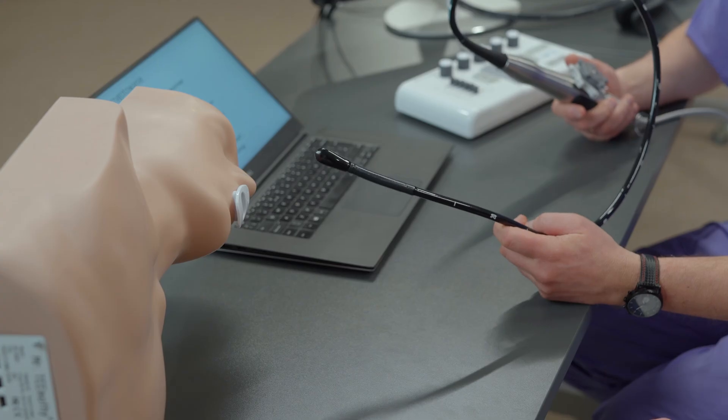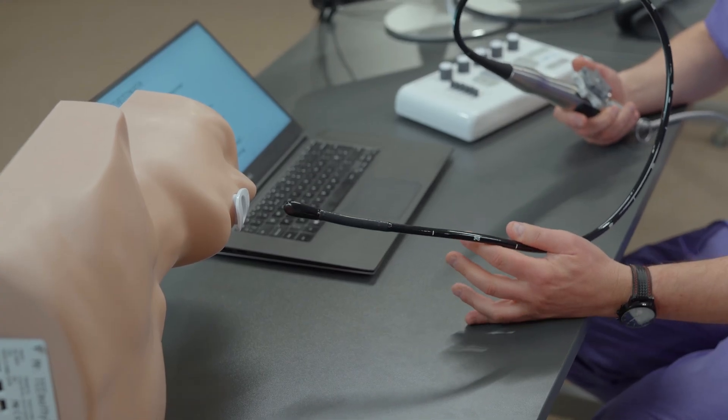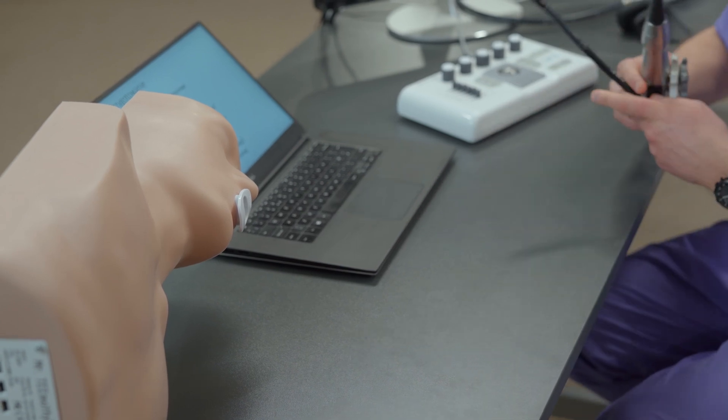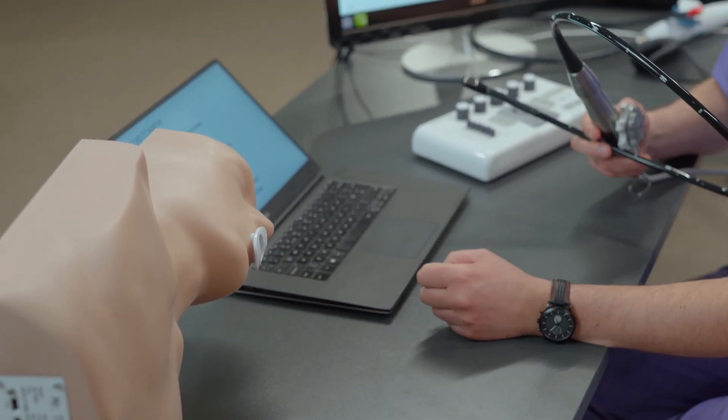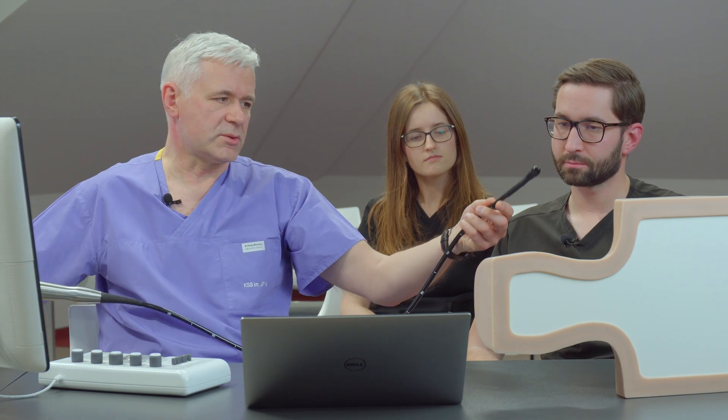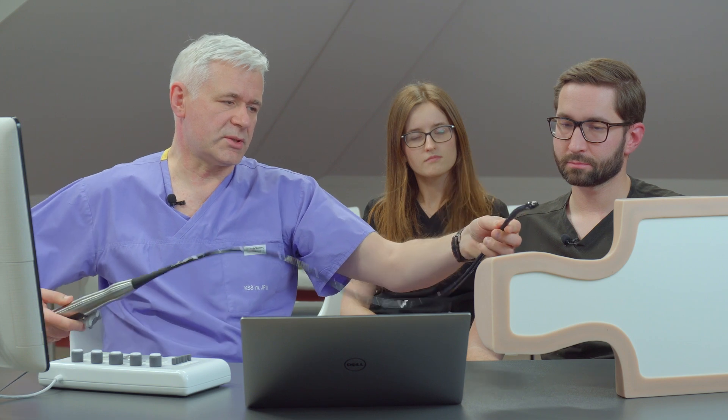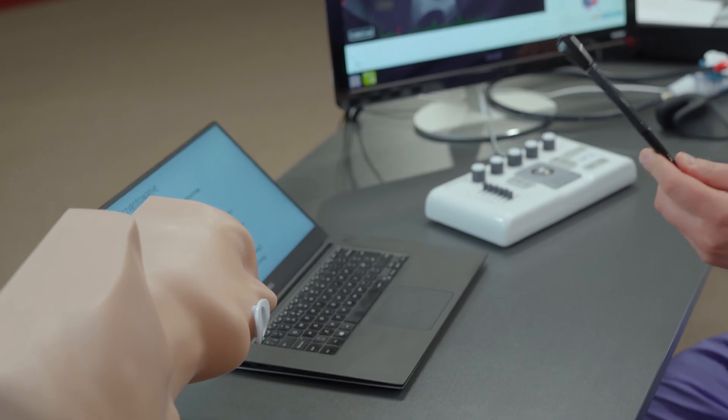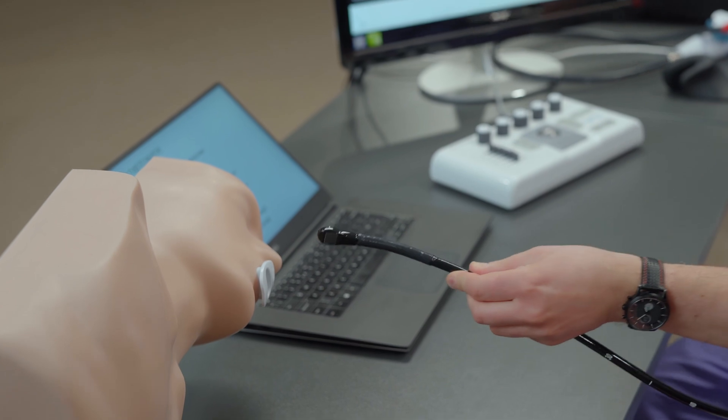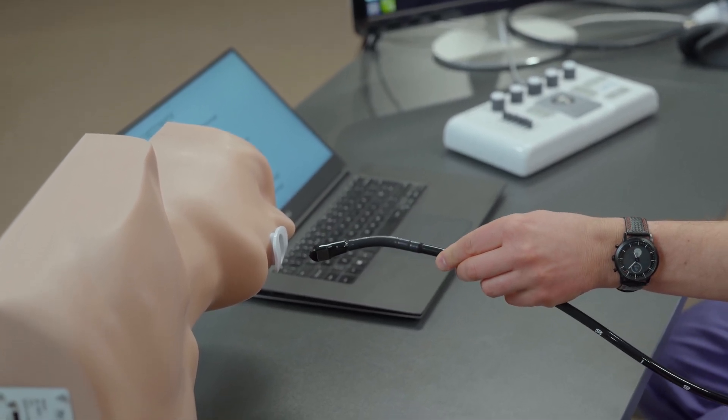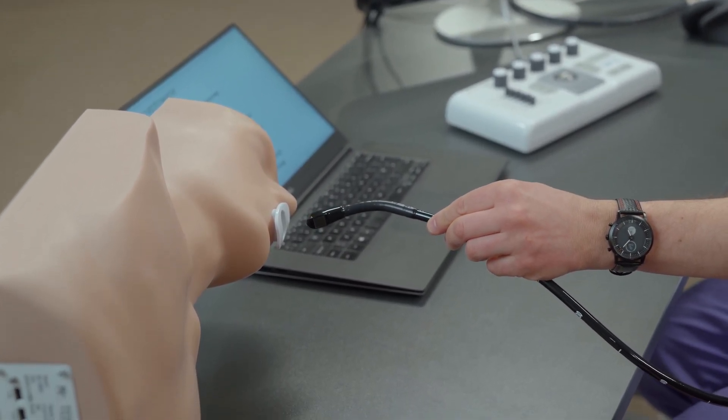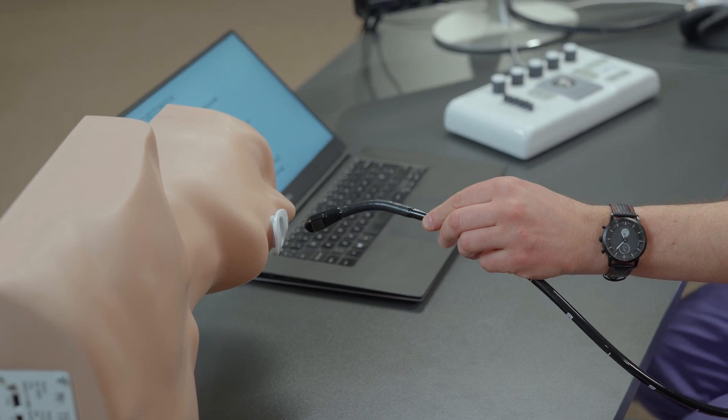In most cases, the patient is in a lateral position with a mouth guard inserted to protect the teeth, and they're going to swallow. Usually we insert the probe like this, slightly bending, but without blocking it in this position, just to slightly bend to cross the first curvature of the pharynx.